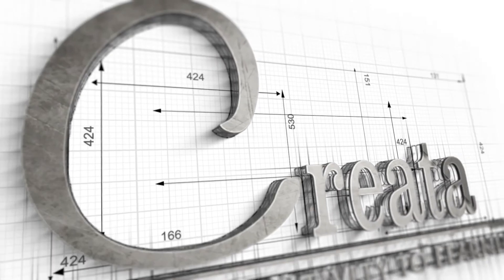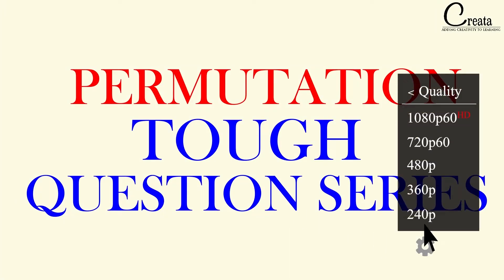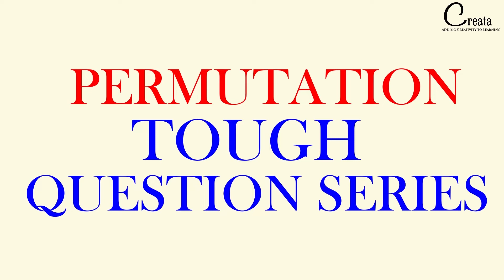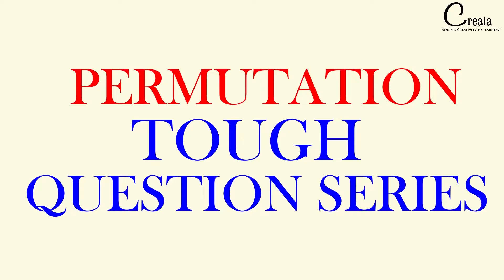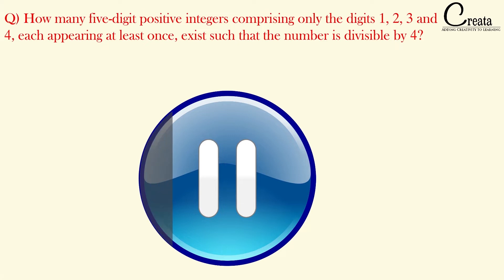In this section, we will cover some higher level questions compared to the previous two lectures. This will be a big lecture of around 45 minutes. We have divided the lecture into 3 parts and this is the first part. Our first question is: how many 5-digit positive integers comprising only the digits 1, 2, 3, and 4, each appearing at least once, exist such that the number is divisible by 4? Pause the video and try to solve this question on your own.